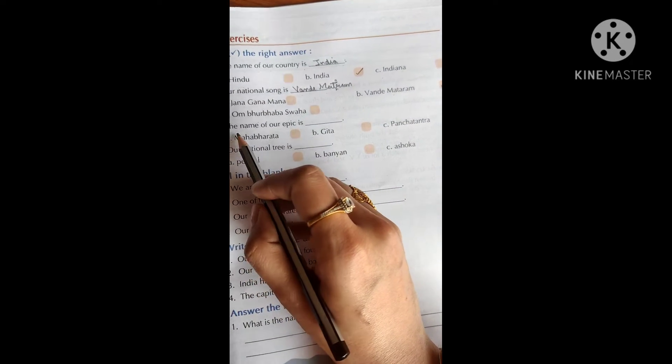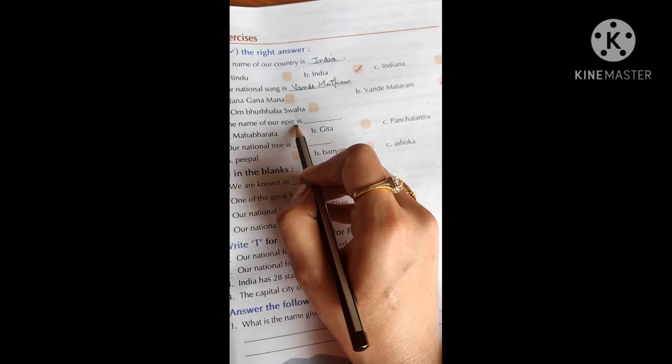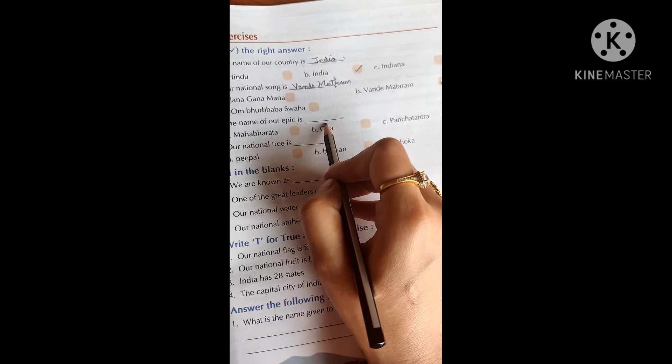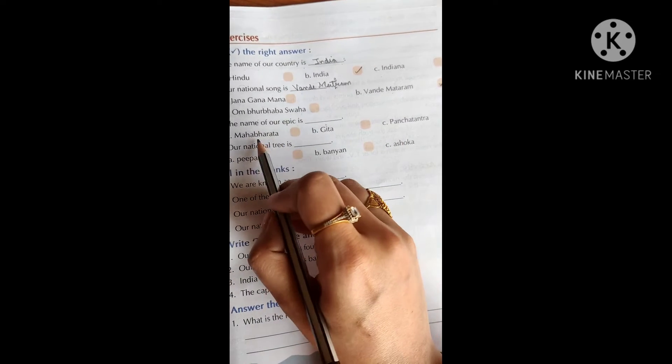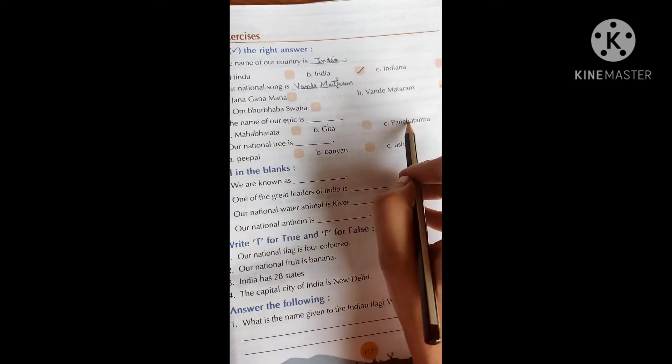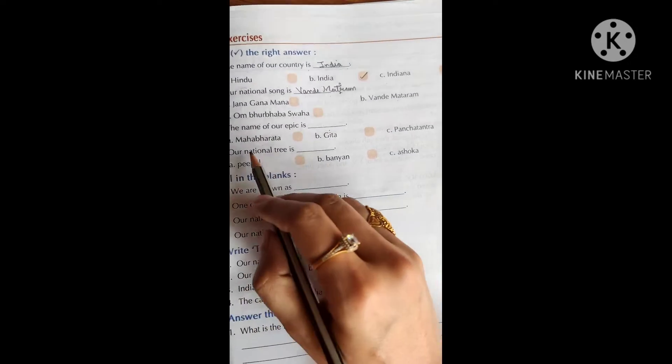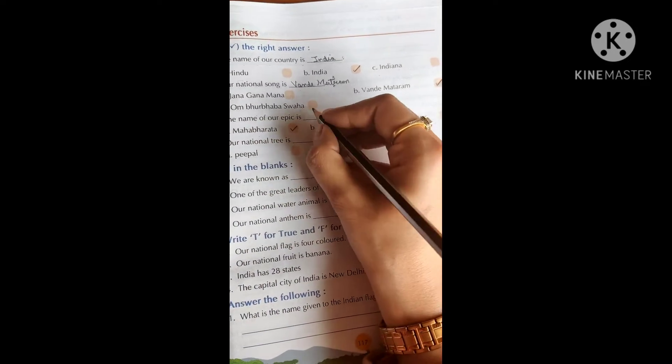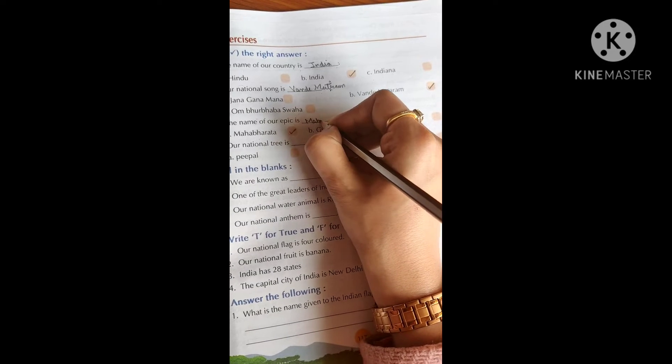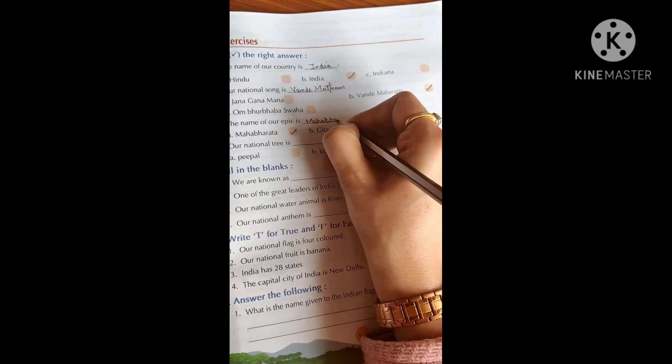Next, the name of our epic is dash. What is the name of our epic? Mahabharata, Gita, Panchatantra. So it's Mahabharata. Mahabharata is the name of our epic.